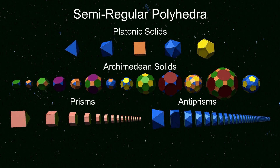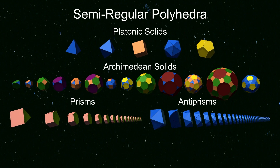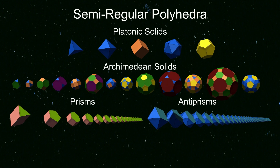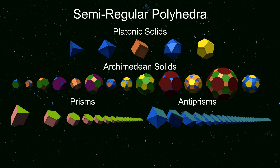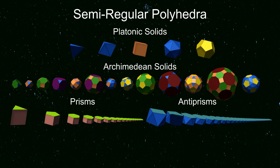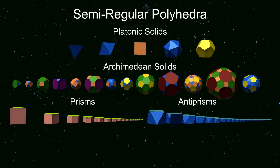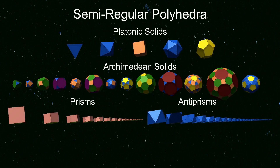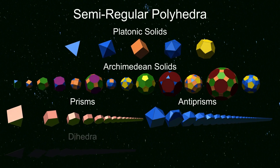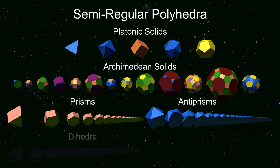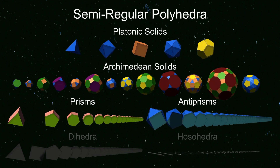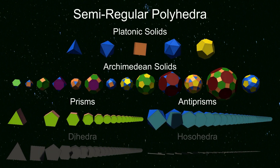These four families are the polyhedra normally considered semi-regular. There are two more families of degenerate polyhedra which might be included — shown in grey to indicate they are not usually considered real polyhedra. The dihedra, a flat two-faced polyhedron, and the hosohedra, a one-dimensional polyhedron whose faces are digons having only two vertices.